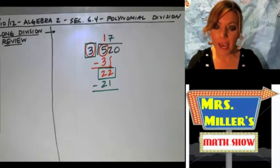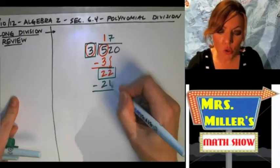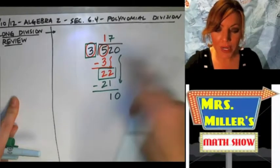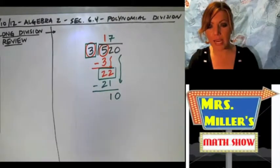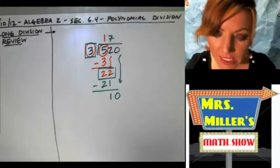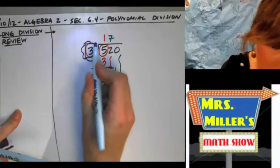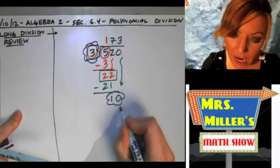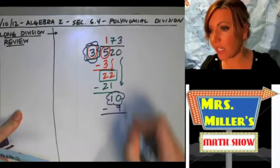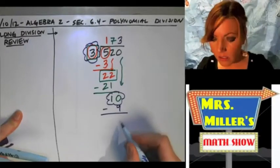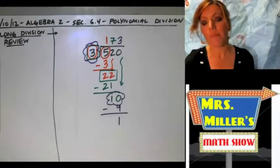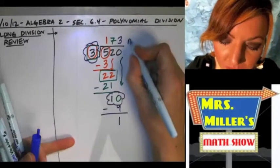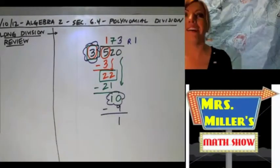Let's just do this real fast. 22 minus 21 is one, and then we bring down the zero. Three goes into 10 — how many times? Three times. So we put a three up here. Three times three is nine, and then we subtract to get 10 minus nine is one. Now do you guys remember? R1 — you guys remember the R?